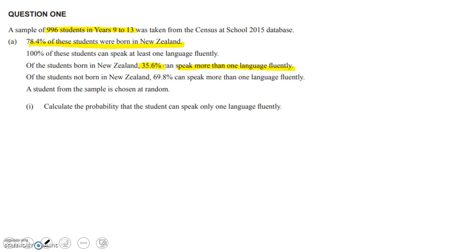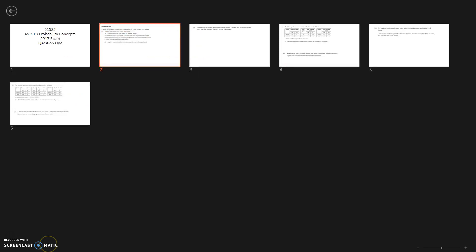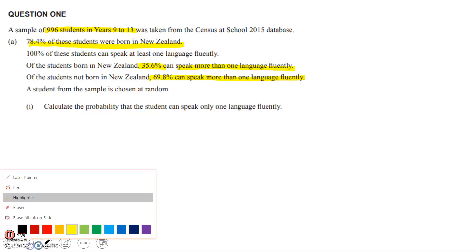We've got 35.6% of those born in New Zealand can speak more than one language. 69.8% of those not born in New Zealand can speak more than one language. You can do this using a table or you can do it using a tree. I'm going to do it using a table.